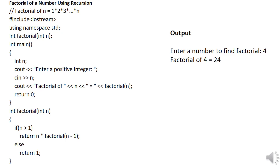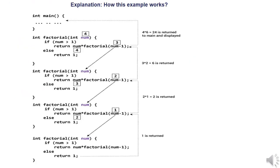I will now show you how this is working in the next slide. This is what is happening when you call the function factorial by passing the value 4. Inside the main function, when you call the function factorial by passing the value 4, the control goes to the function definition.